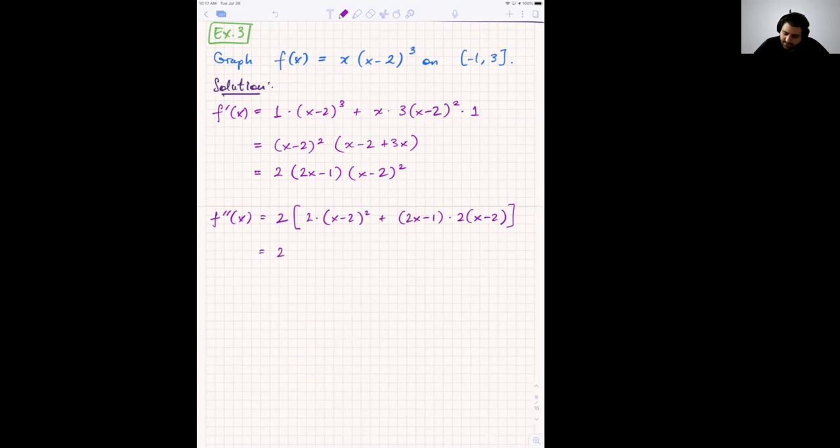Alright, so we now have a 2. And then factor out (x-2). And what are we left with? We're left with 2(x-2) plus 2(2x-1). Okay, and then from there, the rest of the simplification should be pretty easy. We're left with 12(x-2)(x-1). So we get a common factor of 12 somewhere.